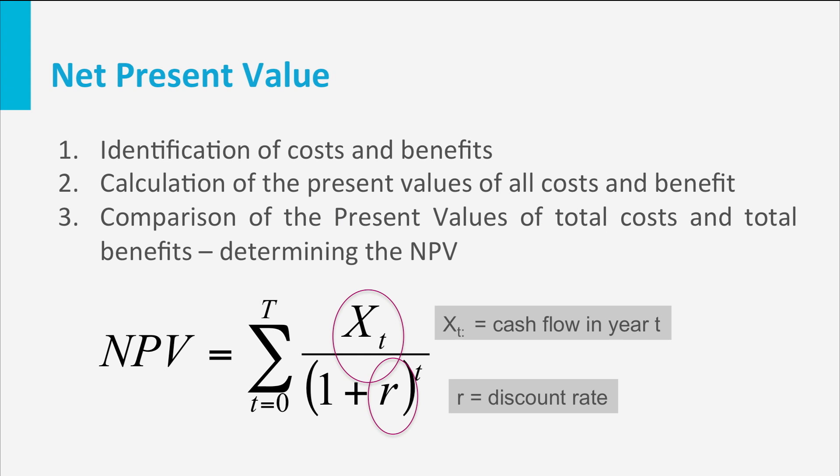The discount rate represents the rate at which we are willing to give up consumption in the present in exchange for additional consumption in the future. Another way of seeing this is that people value future experiences to a lesser degree than present ones, as they are sure about the present events and not sure about future events. The higher the discount rate, the lower the present values of the future cash flows.